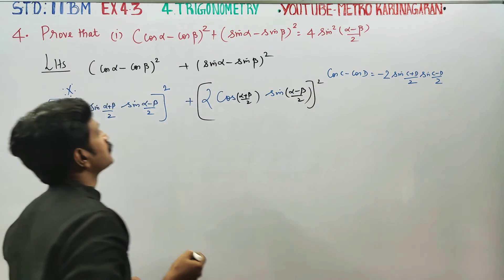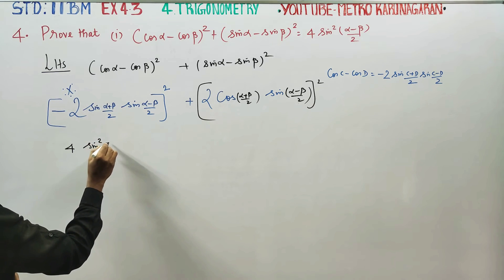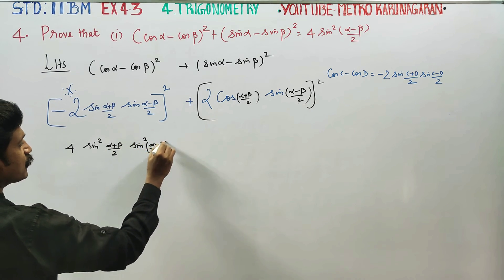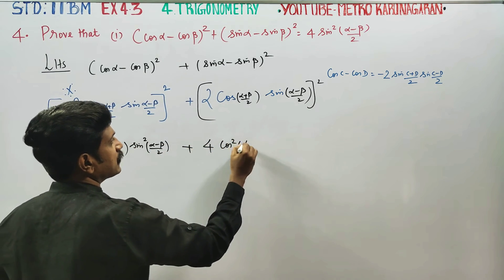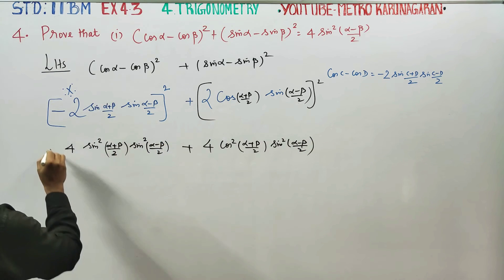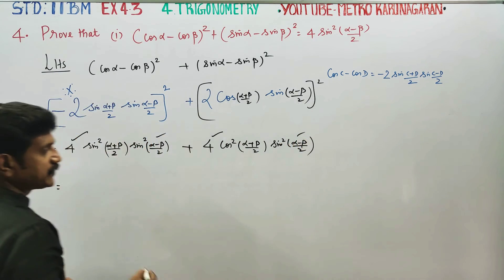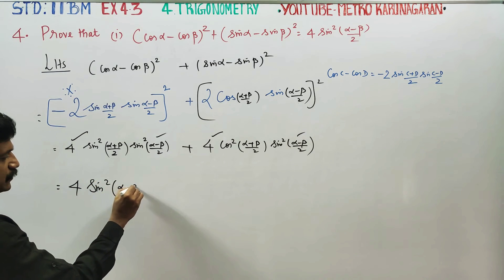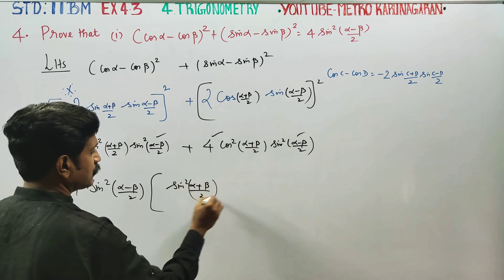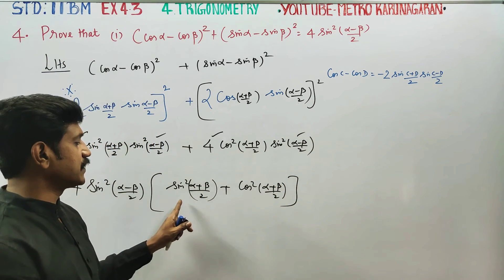Now, taking the square: minus squared plus 2 squared gives 4. It is sin squared alpha plus beta by 2, times sin squared alpha minus beta by 2. Taking sin squared alpha minus beta by 2 as common, and 4 as common.